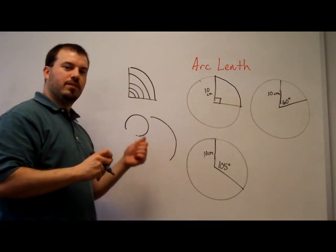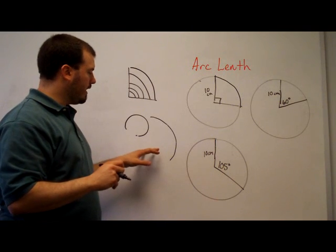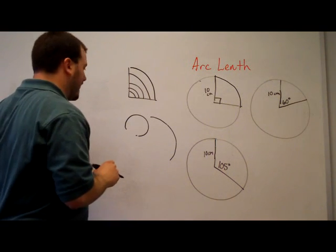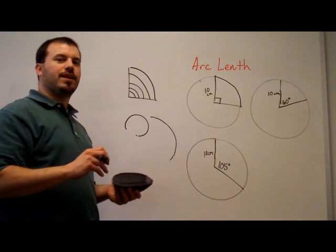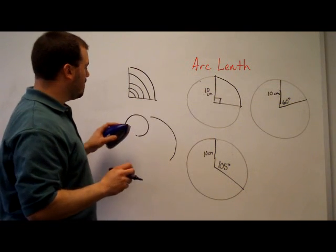So arcs are really measured in two ways, their degrees and their length. In order for two arcs to be exactly the same, to be congruent, they would have to have the same arc length and the same arc measure.